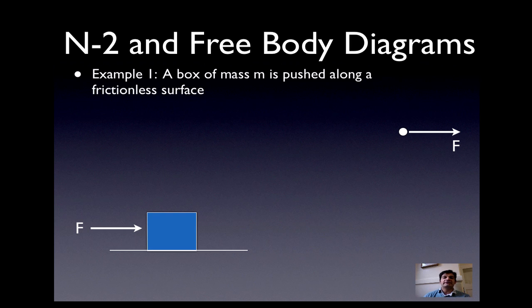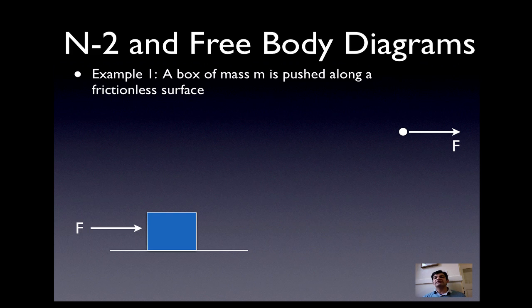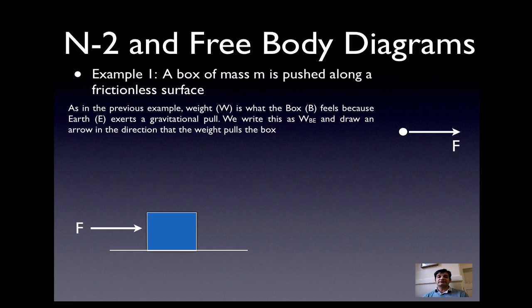Here's a typical example: a box of mass M pushed along a frictionless surface by a force F. In AP physics we're going to use letters rather than numbers. We want to find the acceleration of this box. We'll do this with free body diagrams to be aware of every single force. The box feels weight — W on B due to E — because Earth exerts a gravitational pull, so we draw a downward arrow labeled W, B, E.